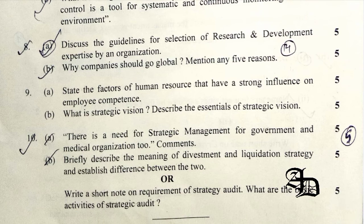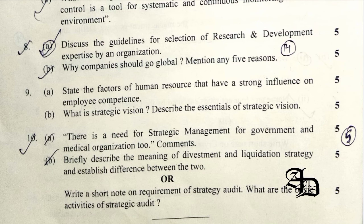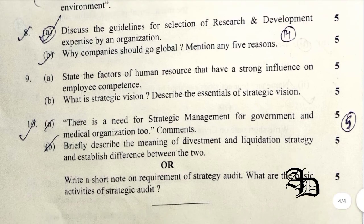Question 9.3 was related to factors of human resources that have a strong influence on the employee component. These include recruitment and selection, periodic appraisal and training, compensation of the workforce, and offering pay and rewards. The question also relates to strategic vision and its essentials. Strategic vision is a roadmap for a company's future and provides specific direction about technology and customer focus. Essentials include: forming a strategic vision is an exercise in intellectual entrepreneurship, and a well-architected strategic vision creates enthusiasm among the members of the organization.